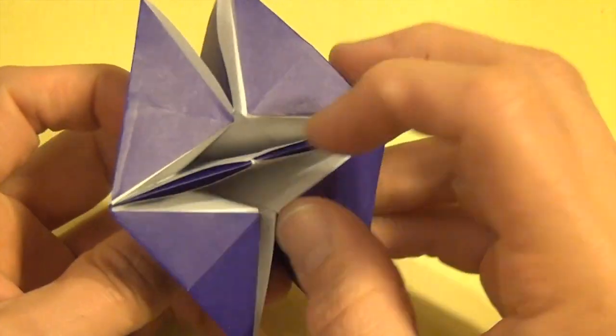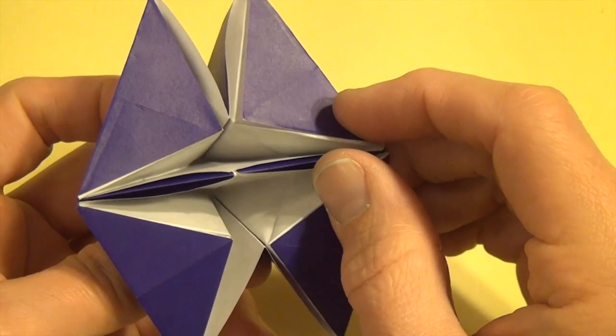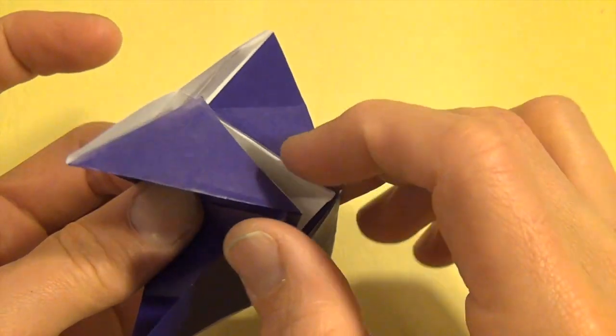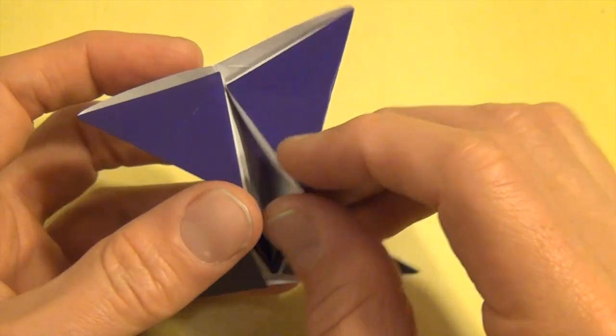Now when you get to where you see these little squinty eyes, fold this down like that. And now look what you have.